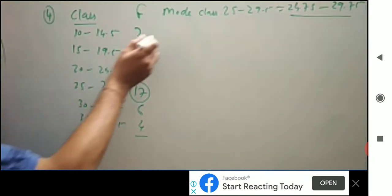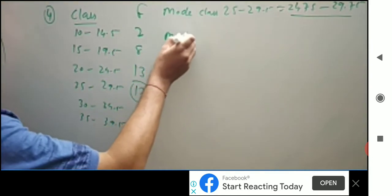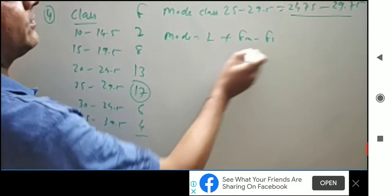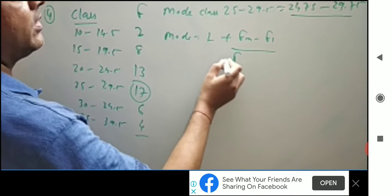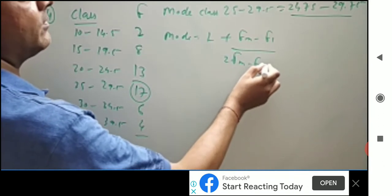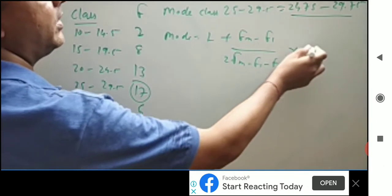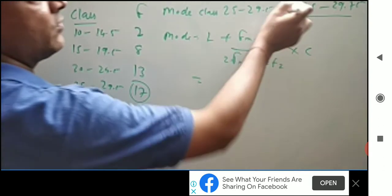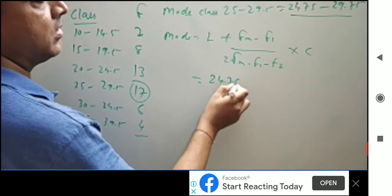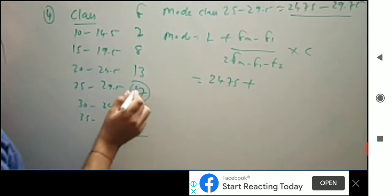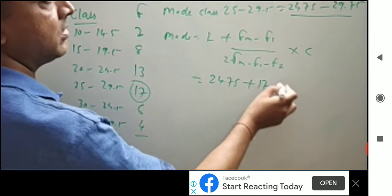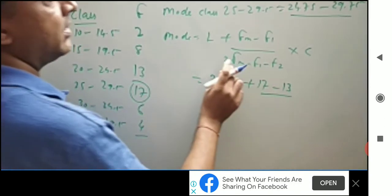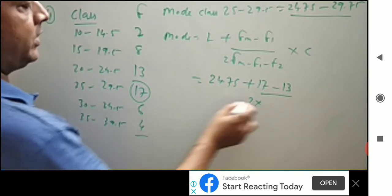Now mode formula: L plus Fm minus F1 divided by 2Fm minus F1 minus F2 into C.